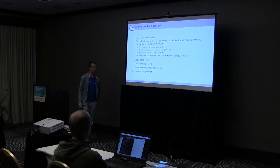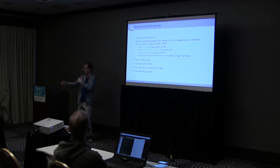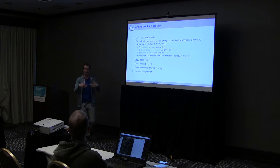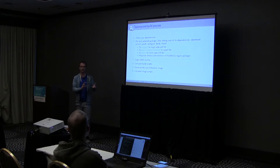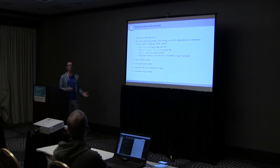Then we generate the root filesystem image, using fakeroot and tools to take files and turn them into an ext4 image, SquashFS image, or whatever format you've selected. Finally we call post-image scripts — executed at the very end of the build. These scripts can take the images BuildRoot has generated and do something with them: combine them into specialized firmware formats, or while developing, automatically refresh or reboot your target.